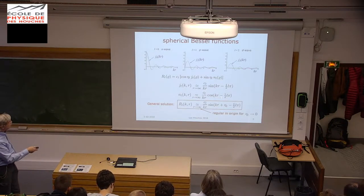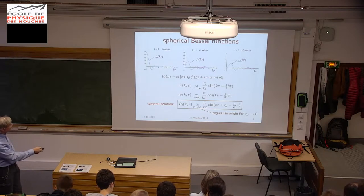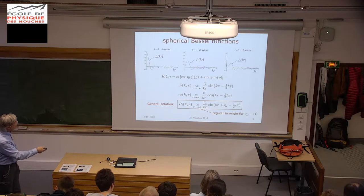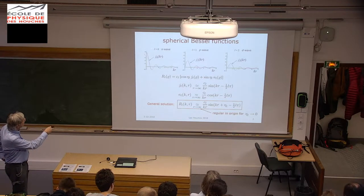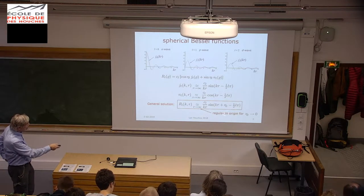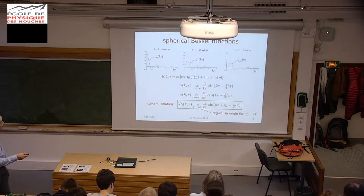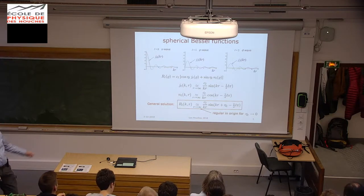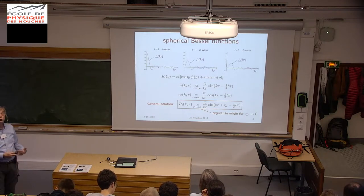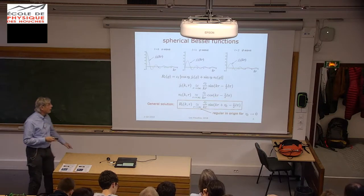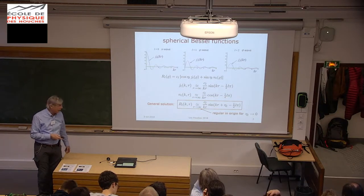The general solution can be written in the form where we have the phase shift. This expression with the phase shift will only give a regular behavior at the origin in the case that the phase shift is zero. I show this simply to show you that you can extend the formalism to higher partial waves: S-waves, P-waves, D-waves, et cetera. So the solutions we did for S-waves can also be done for higher values of angular momentum.